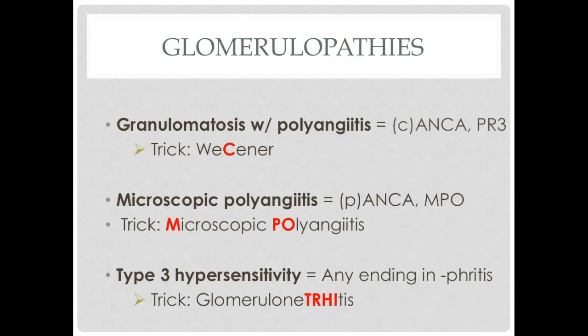For glomerulopathies, two confusing ones are granulomatosis with polyangiitis and microscopic polyangiitis. Granulomatosis with polyangiitis will be marked by C-ANCA antibodies, NPR3-ANCA. The trick is this is called Wegener's — I switch the G to a C and call it 'Cegener's,' and that C represents the C-ANCA. For microscopic polyangiitis, this will be targeted with P-ANCA and MPO. I take letters from the actual name — microscopic polyangiitis — to form MPO. If you know the other is Wegener's with C-ANCA, now you know this one is P-ANCA.